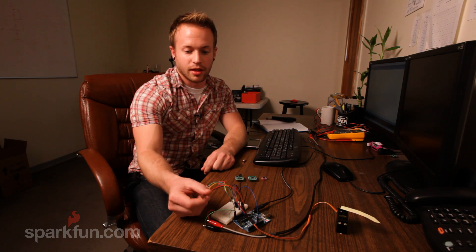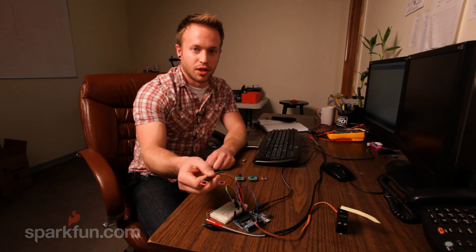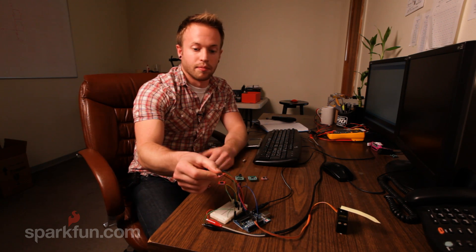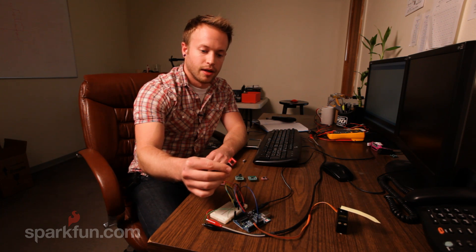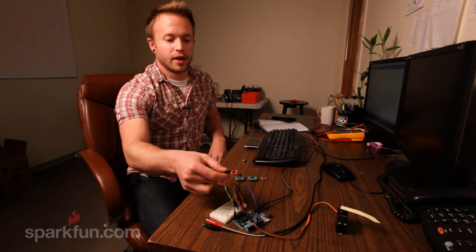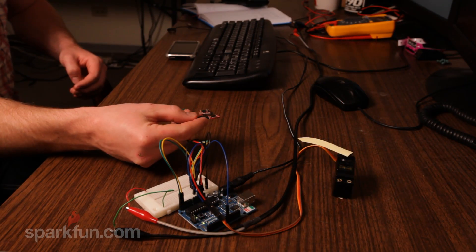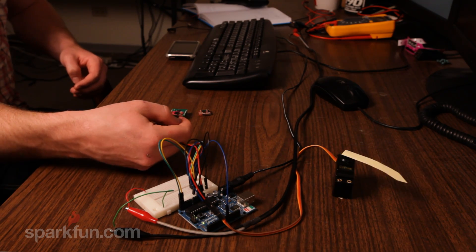Magnetometers are most commonly used as digital compasses, meaning they can detect their position relative to the earth, or north. Here I have a simple two-axis magnetometer hooked up to an Arduino. The Arduino is communicating with the servo, so when I rotate the digital compass, it changes the direction of the arrow on the servo based on where I'm pointing the digital compass.